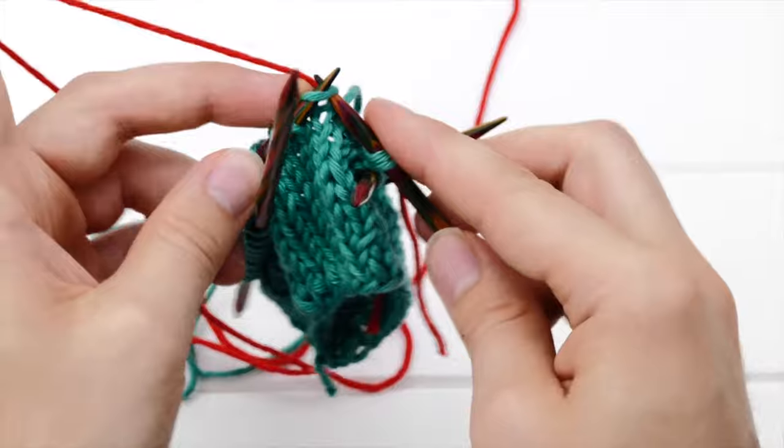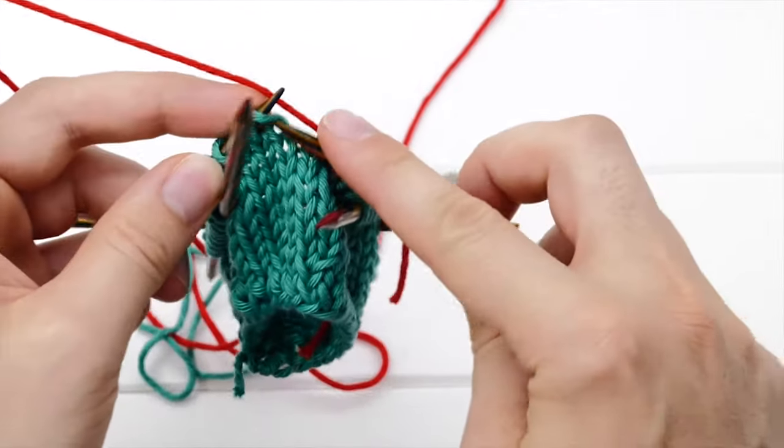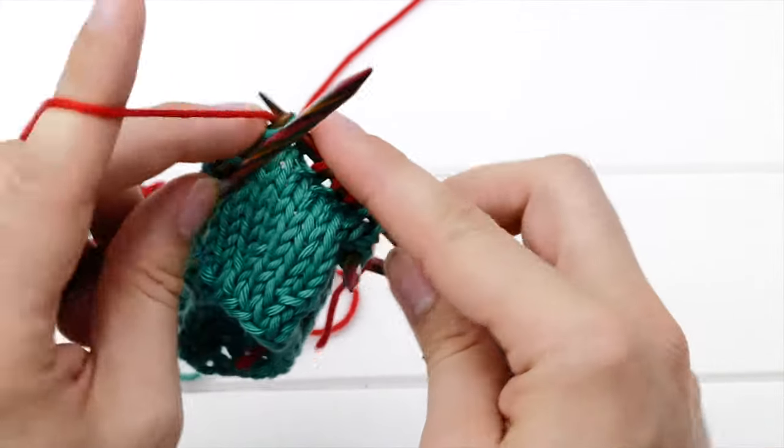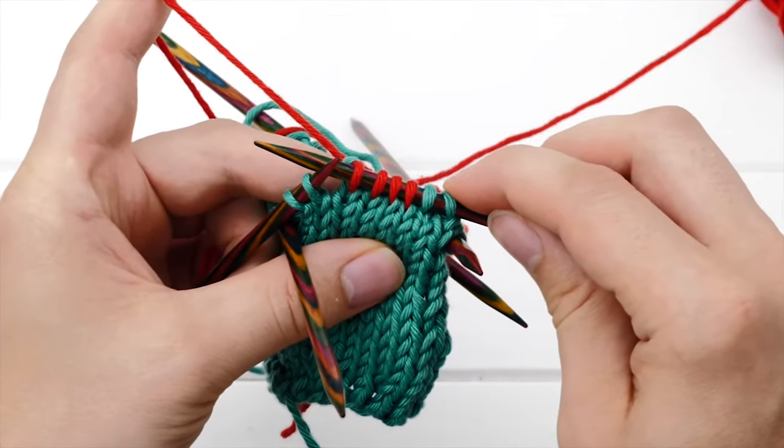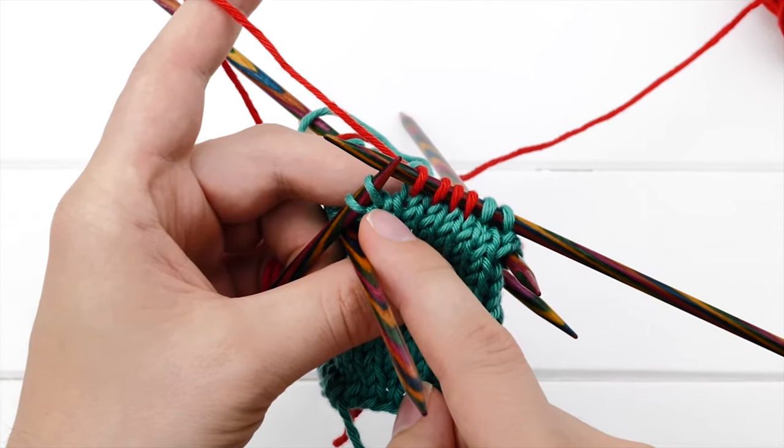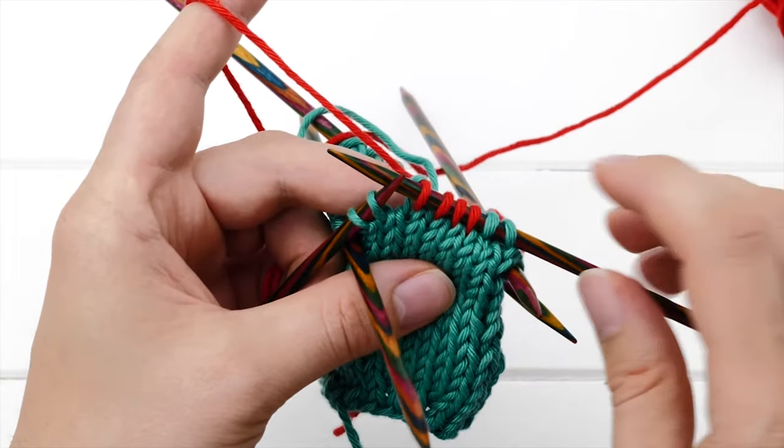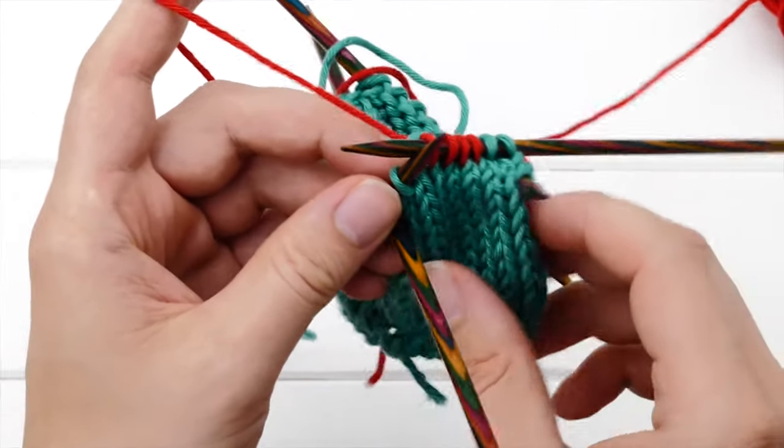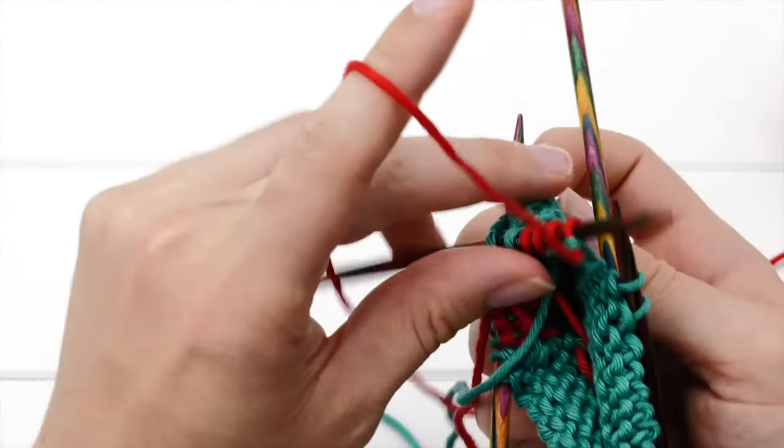And then you knit the color block according to the chart. In this case, I'm going to knit four stitches. One, two, three, four stitches in the red color. And normally, you would pick up another bobbin here and twist the yarns and continue knitting in teal. Well, we are not going to do this. Instead, you have to turn your work around like so.